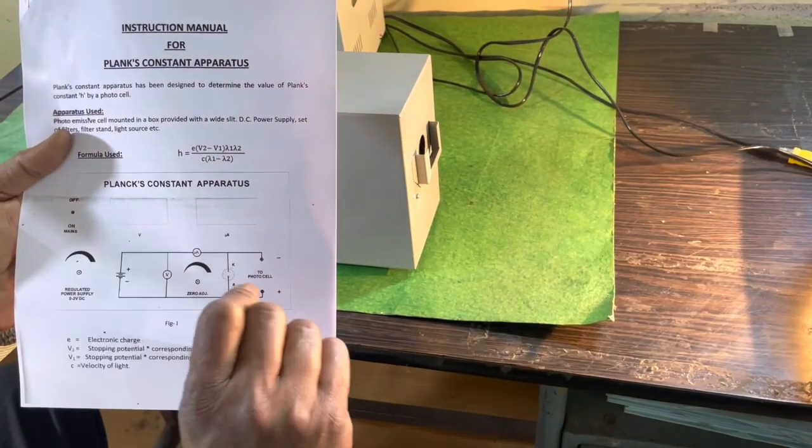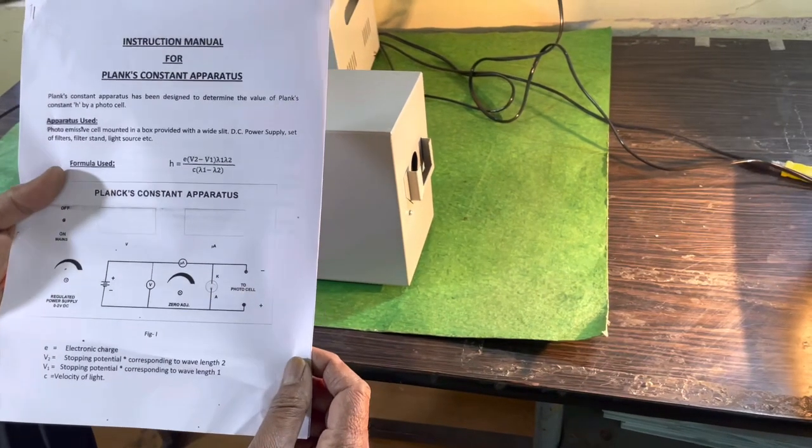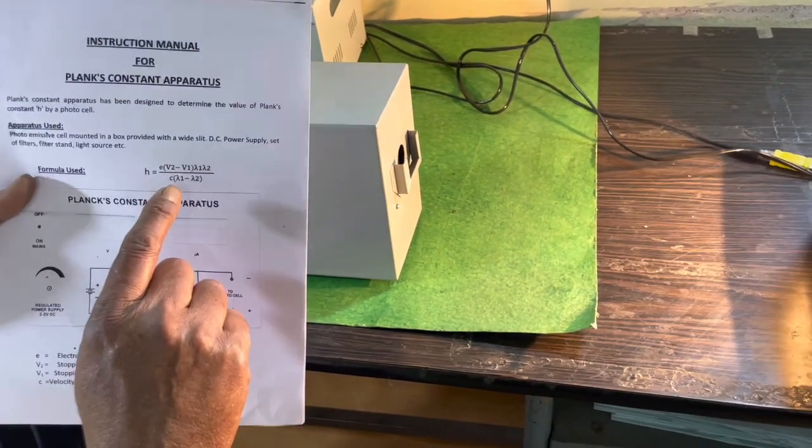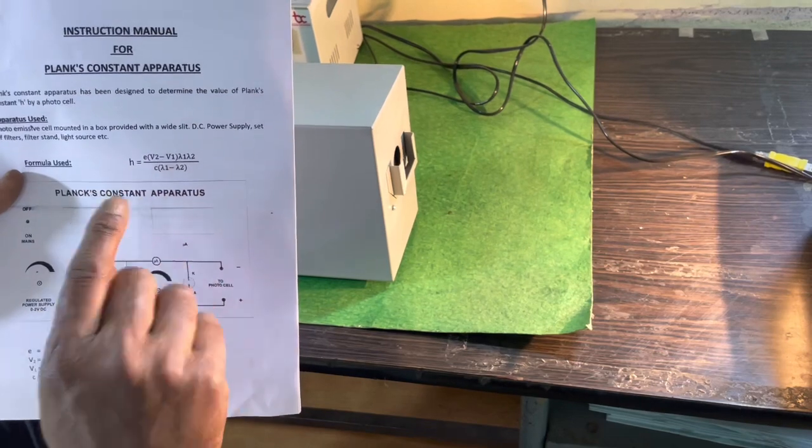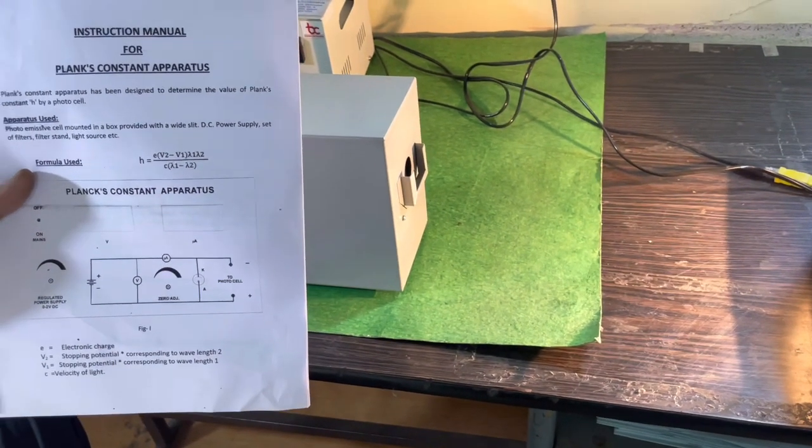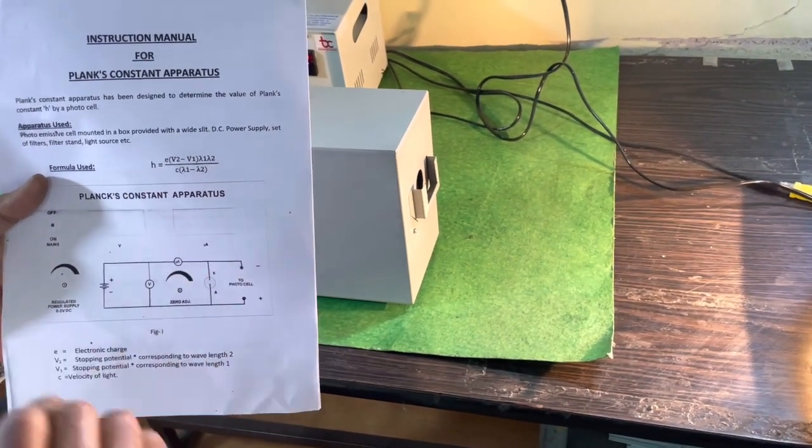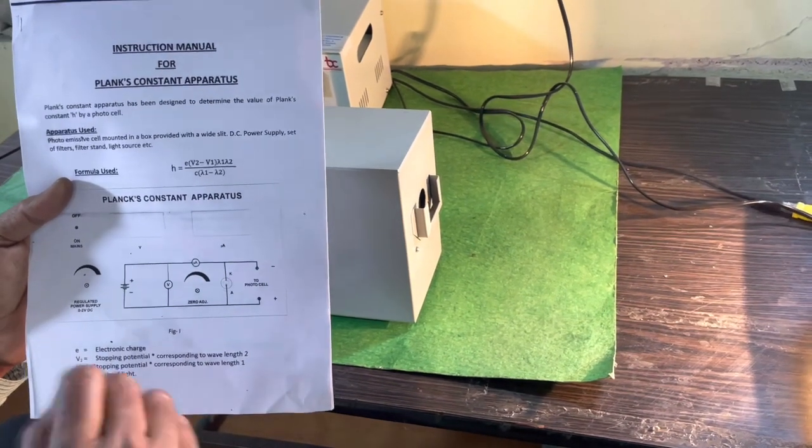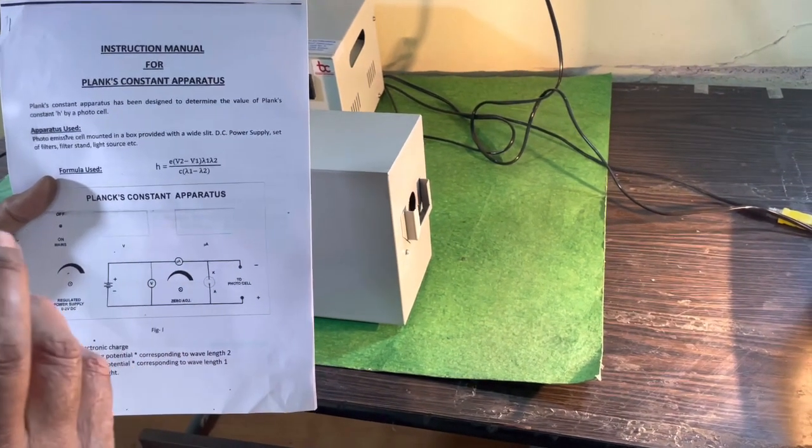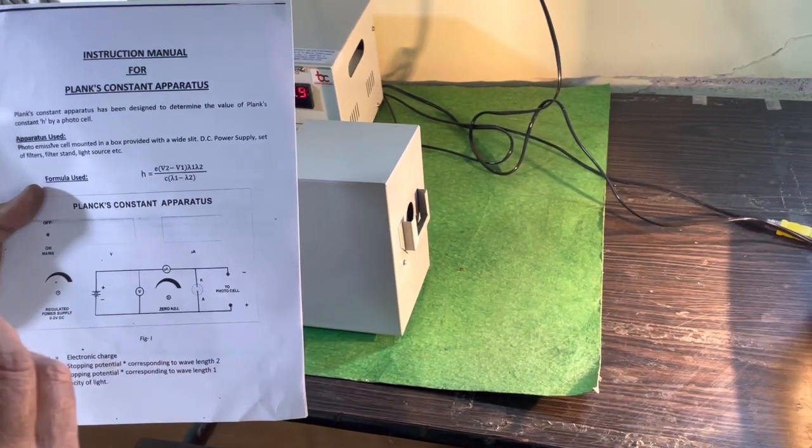Here we have to obtain V₁, which is the stopping potential for the blue color, and V₂, which is the stopping potential for the green color. Now I will explain how we can find out the stopping potentials V₁ and V₂.